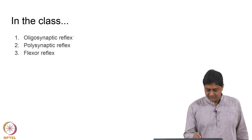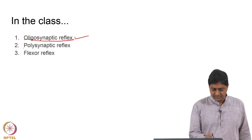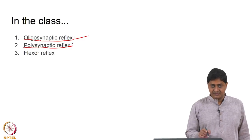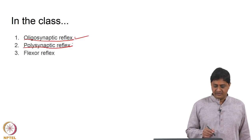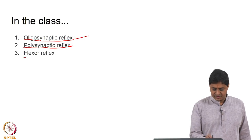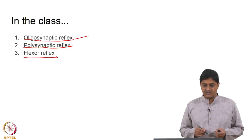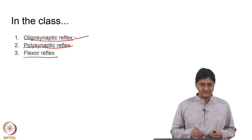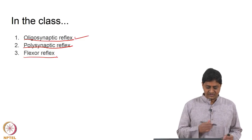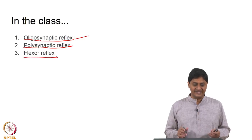In this class we will talk about three things: oligosynaptic reflexes with a couple of examples, polysynaptic reflexes with one or two examples, and the flexor withdrawal reflex, which was mentioned in an earlier class and will be discussed in some detail here.